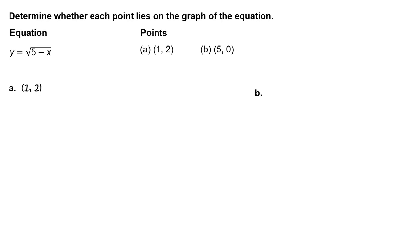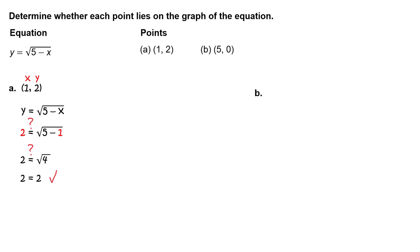Part a: Determine whether the point lies on the graph of the equation. First, write y equals the square root of the quantity 5 minus x. Next, substitute 1 for x and 2 for y. Does 2 equal the square root of the quantity 5 minus 1? Simplify: does 2 equal the square root of 4? Simplify further to get 2 equals 2, which is a true statement. Yes, the point is on the graph.